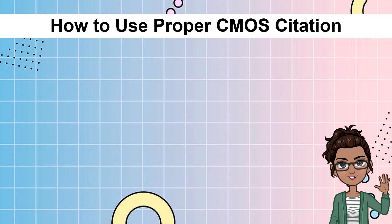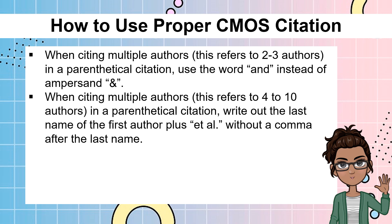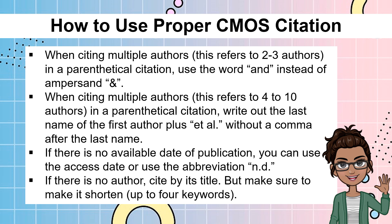How are we going to use the proper CMOS citation? Not all the time is the author only one — there are instances where authors are multiple or the date is not available. When citing 2 to 3 authors in a parenthetical citation, use the word AND instead of an ampersand. When citing 4 to 10 authors, write out the last name of the first author plus et al. without a comma after the last name. If there is no available date of publication, you can use the access date or use the abbreviation ND. If there is no author, cite by its title, but make sure to shorten it to up to 4 keywords.